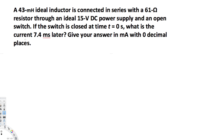Let's look at this problem. A 43 millihenry ideal inductor is connected in series with a 61 ohm resistor through an ideal 15 volt DC power supply and an open switch. If the switch is closed at time t equals zero, what is the current 7.4 milliseconds later? The question is asking us to find the current after a certain time.